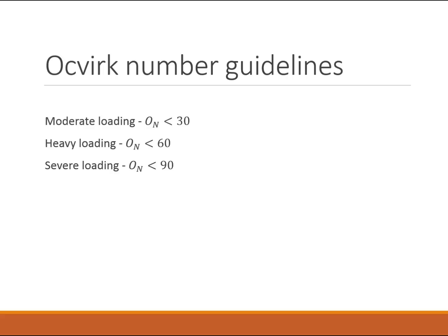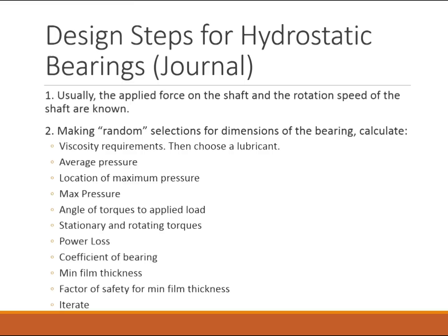The guidelines are: for a moderate loading condition aim for an Ocvirk number less than 30; for heavy loading aim for less than 60; and for severe loading aim for less than 90. There are a lot of steps to go through, and this is best shown using an example — in class we'll start with a problem statement and move through all of these steps to see how to safely navigate the design of a journal bearing.